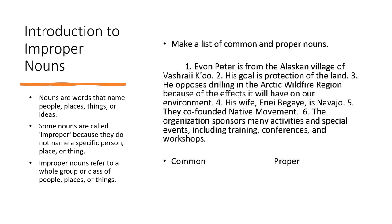Now let's do a quick review. Nouns are words that name person, place, ideas, animals, or things. Some nouns are called improper because they do not name the specific person, place, or thing. Improper nouns refer to a whole group or even one or a class of people, places, or things. So for example, cats or cat. But if you were to tell me the breed of cat that you're looking at or that you own, then I would capitalize that name of that cat. Or if you have named your cat, you would capitalize the name of your cat.